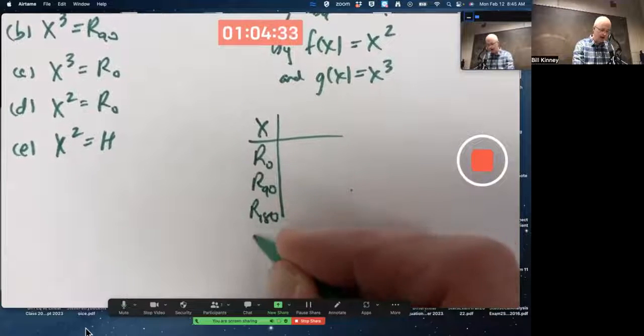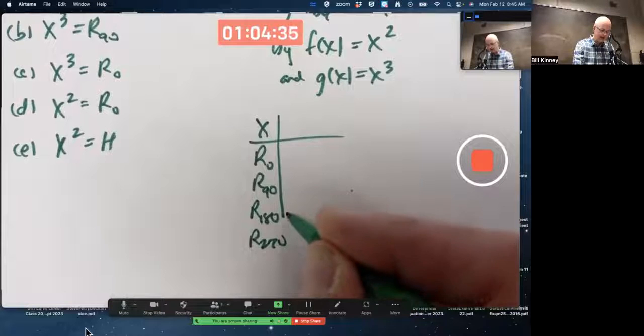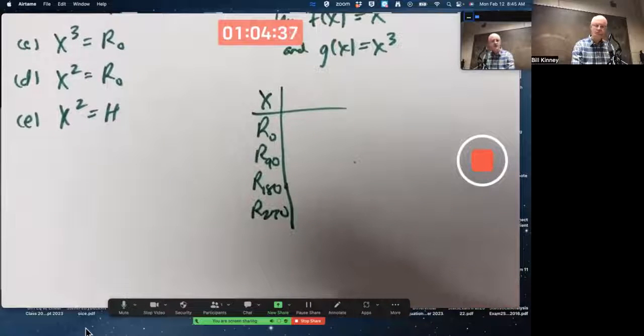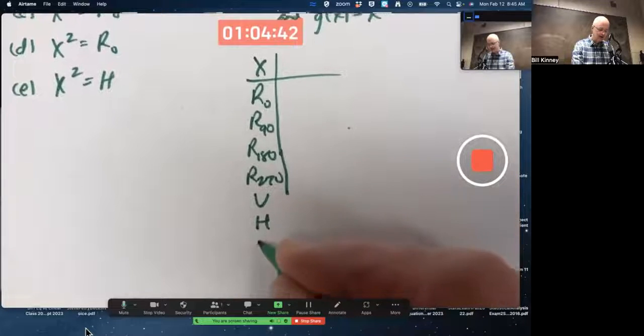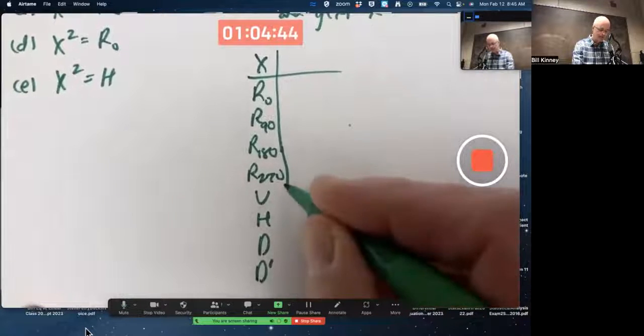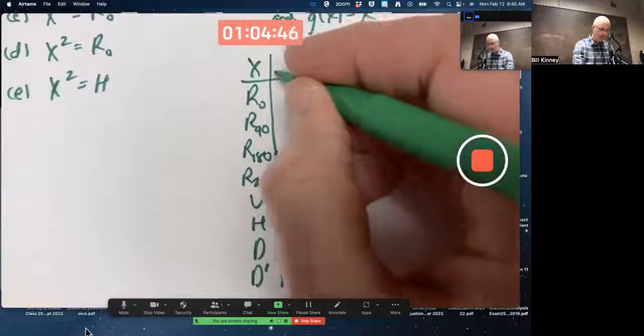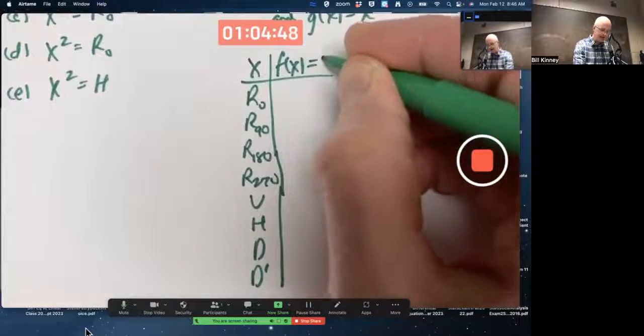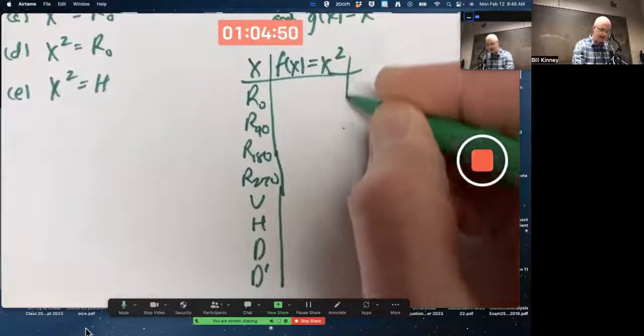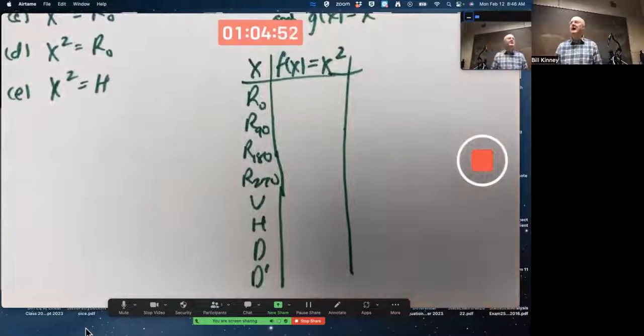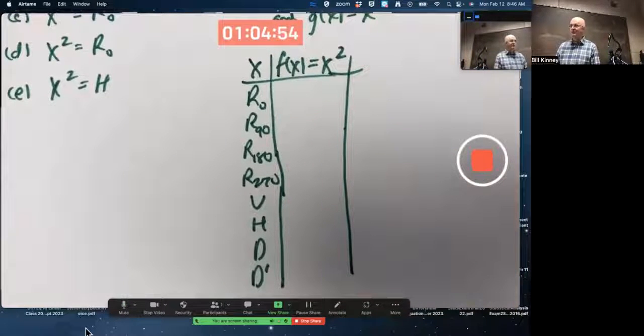All the possible functions in D4: R0, R90, R180, R270, so these are rotations, counterclockwise rotations of a square by those different degrees. There's V, there's H, there's D, and there's D prime.